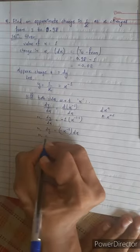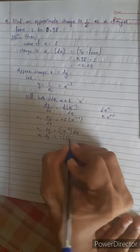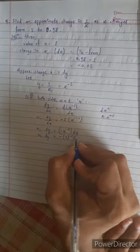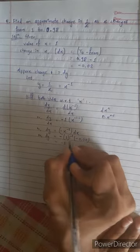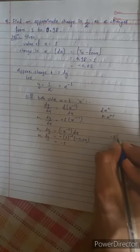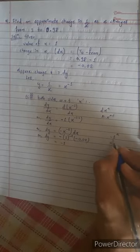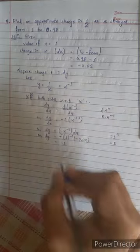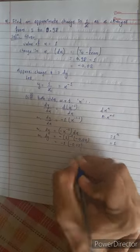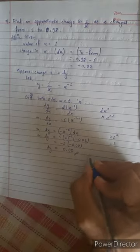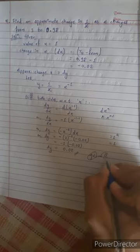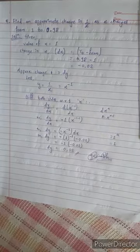Substituting all values: x equals 1 and dx equals negative 0.02. So dy equals negative 1 over 1² times negative 0.02, which equals negative 1 times negative 0.02. The answer is 0.02.